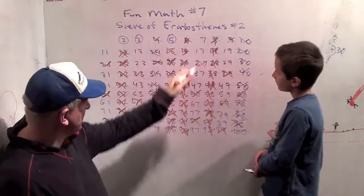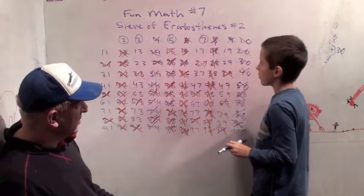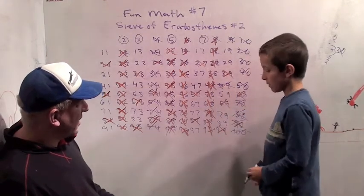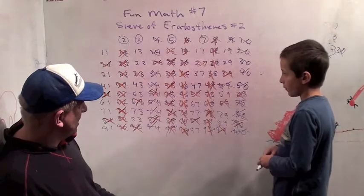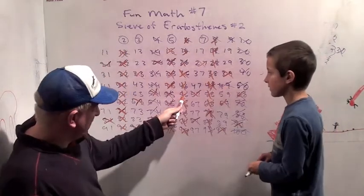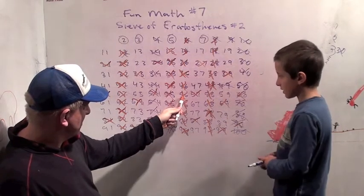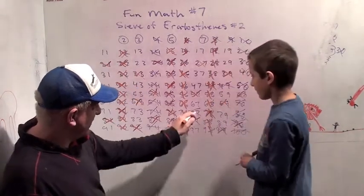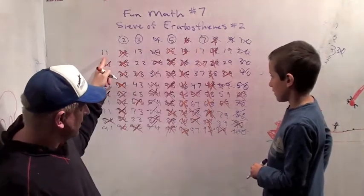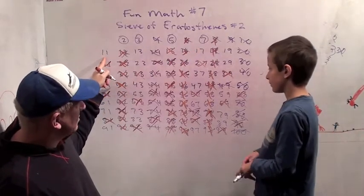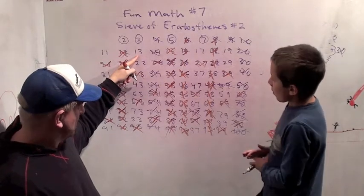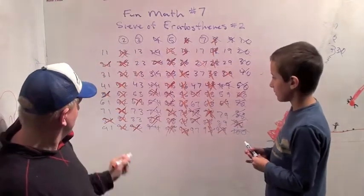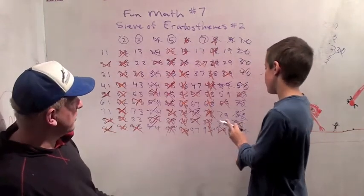So we crossed out all the multiples of five. Now we're up to seven. So that means the first number we should be looking to cross out is forty-nine. Okay. Very interesting. Now we've got to count forward by sevens. Forty-nine plus seven is fifty-six. Fifty-six plus seven is sixty-three and then seventy, seventy-seven, which happens to be seven times eleven. And so the next number we should be looking for is seven times thirteen, which is ninety-one. Hey look, there's ninety-one right there hiding in the corner. Not crossed out.